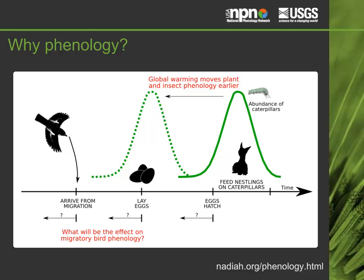However, not all species and regions are changing at the same rate, leading to mismatches. How plants and animals respond to climate can help us predict whether their populations will grow or shrink, making phenology a leading indicator of climate change impacts.